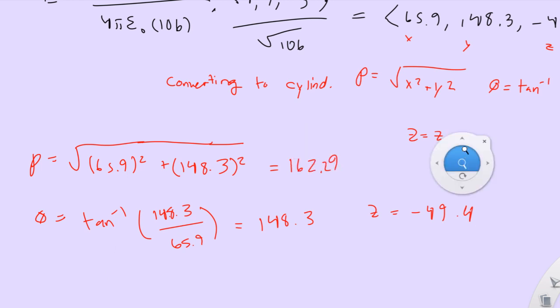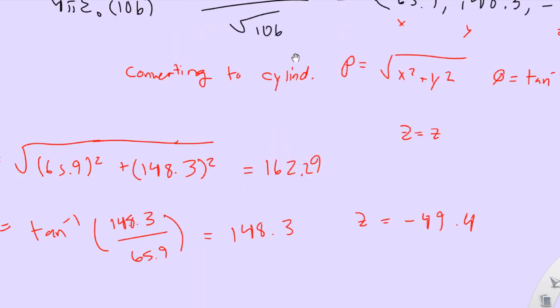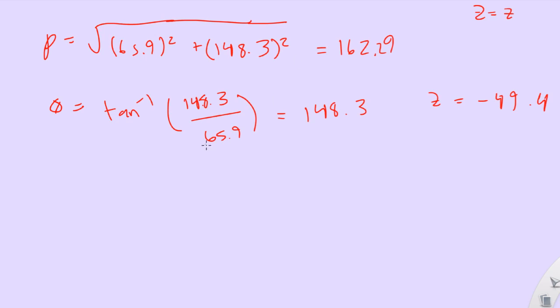So now that's basically our whole problem. E would then be equal to 162.29, 148.3, and negative 49.4. And this gives us our problem, because this is e of rho, this is e of phi, and this is e of z. That's essentially what it's asking for. I did it in a bit of a different form, but it's the same thing.